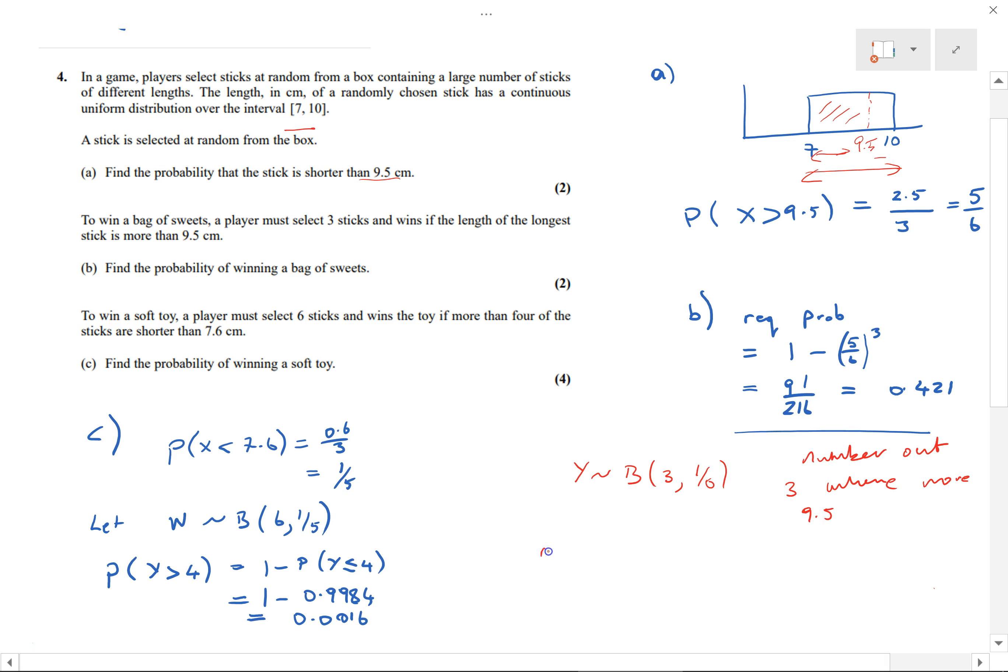Well, in that case the longest one certainly is greater than 9.5. They're all greater than 9.5. There will be one of them which is longer than the other two, but the point is it's going to be more than 9.5. And of course, even if only two of them are greater than 9.5 and one of them is shorter than 9.5, the longest one is certainly greater than 9.5.